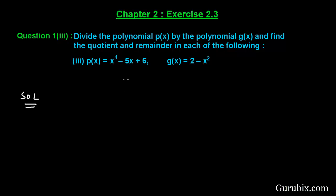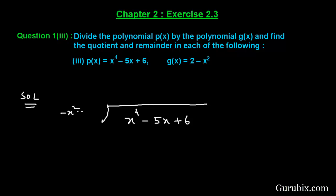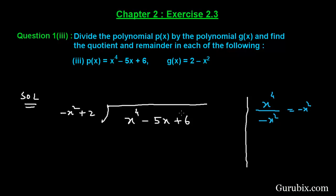First of all, we shall write the dividend here, and the dividend is x raised to the fourth power minus 5x plus 6. This is the dividend. Now we shall write the divisor, which is minus x squared plus 2. We write both the dividend and divisor in standard form. To find the first term in the quotient, we divide the first term of the dividend, x⁴, by the first term of the divisor, minus x squared. This gives minus x squared, which is the first term in the quotient.